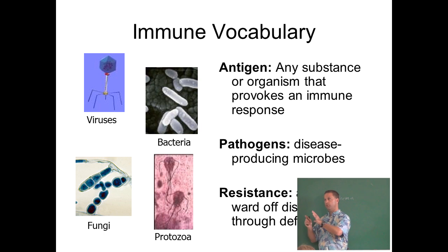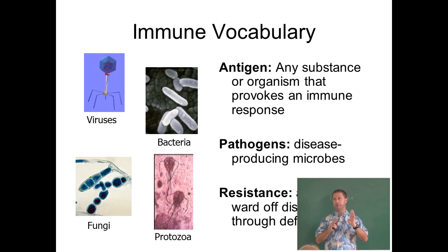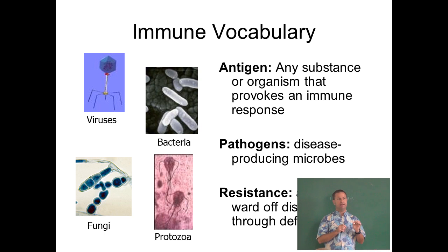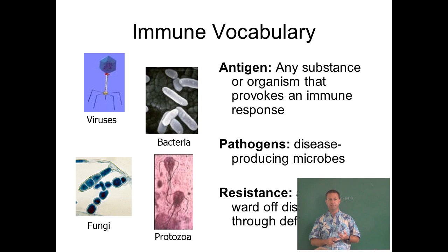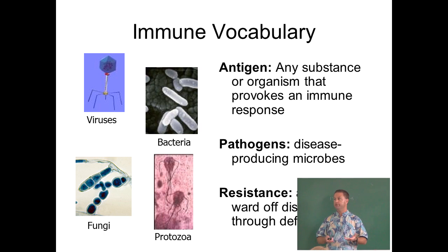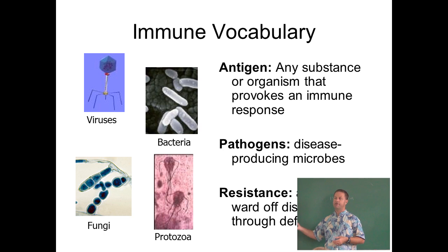Now we'll concentrate on immunity. First, some vocabulary: an antigen is anything that elicits an immune response — anything the immune system reacts to. It could be bacteria or a virus, but sometimes it's not harmful at all. Pollen, for example, is an antigen that elicits an immune response but is not pathogenic — it just gives us hay fever. Pathogens are disease-causing microbes: bacteria, viruses, protozoa, and fungi.